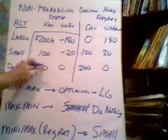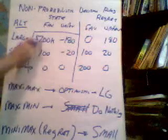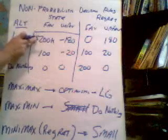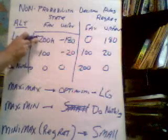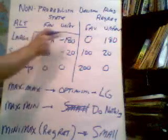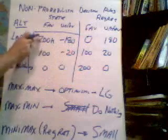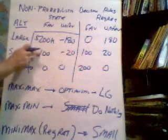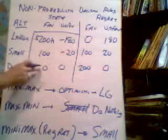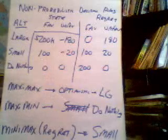In the favorable market column, where is there no regret? The best outcome is $200,000, so that gets a regret of 0. To get the other regrets in that column, you just subtract: 200 minus 100 gives you $100,000 of regret, and 200 minus 0 gives you $200,000 in regret.